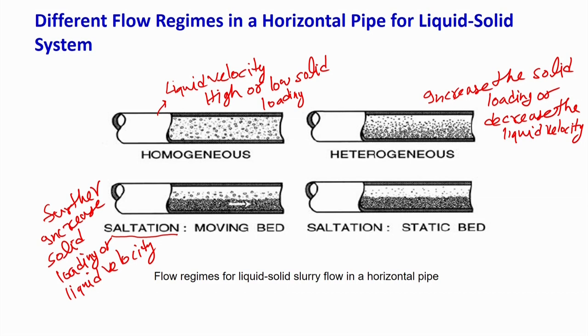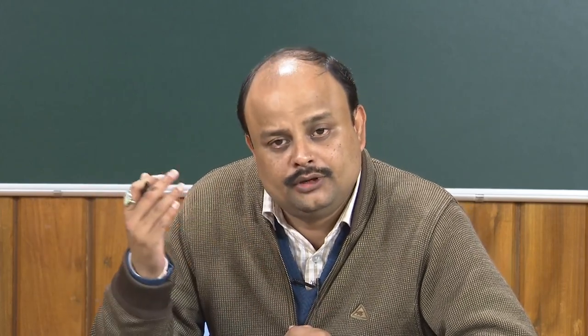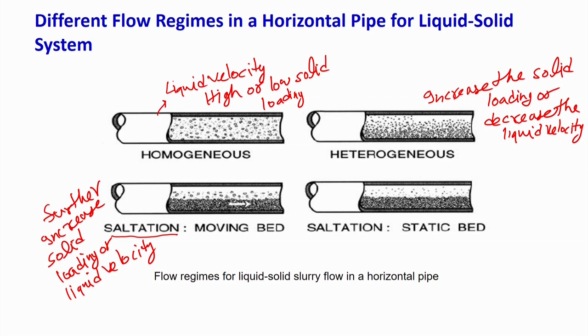If you further increase the solid loading, the total energy gained by the solid from the liquid is reduced, so the solid will start settling and will no longer be suspended — this is the saltation regime where solid moves like a packed bed but is still transported. If you further reduce liquid velocity or increase the solid bed, you get a static bed condition and solid transportation reduces significantly. Most solids will move at a very slow rate, only those suspended in the liquid on top will move, and most solids will behave like a packed bed. These four regimes in hydraulic conveying are: homogeneous, heterogeneous, moving bed, and static bed.